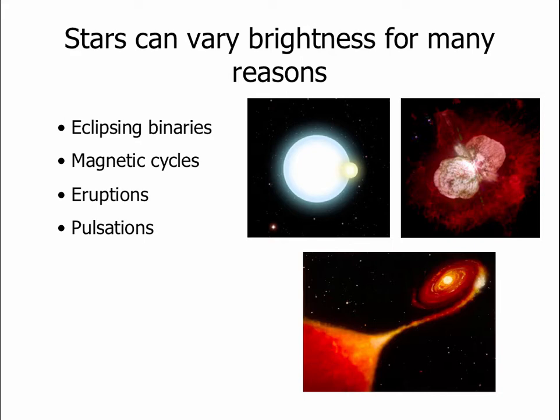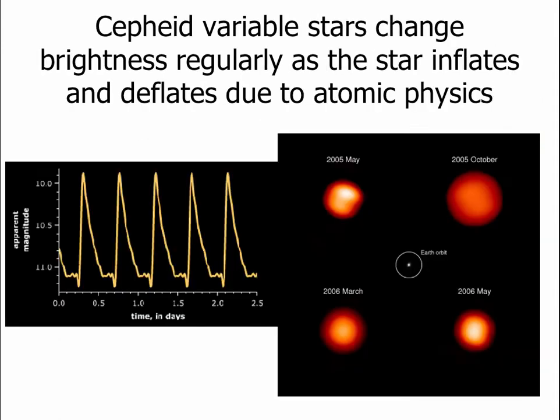Finally, stars can pulsate. They can change their size and as they pulsate they change their brightness as well. One of the most famous and most crucial type of variable stars are Cepheid variable stars. They get this name because there's a star in the constellation Cepheus called Delta Cephei and it's the prototype for all stars that change their brightness like this. The star inflates in size and then slowly deflates. As it inflates it cools off; as it deflates it heats back up, and the combination of the growing, the shrinking, and the changing temperature causes the star's brightness to change in a very regular pattern.